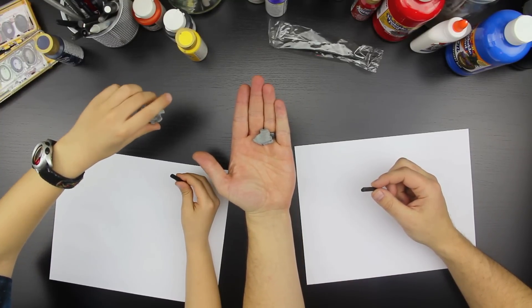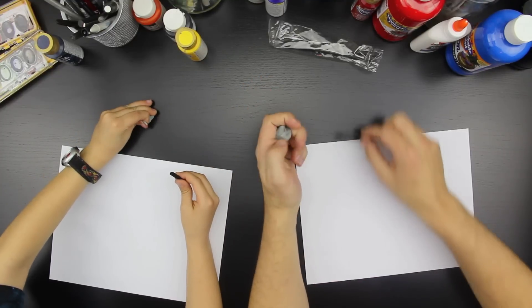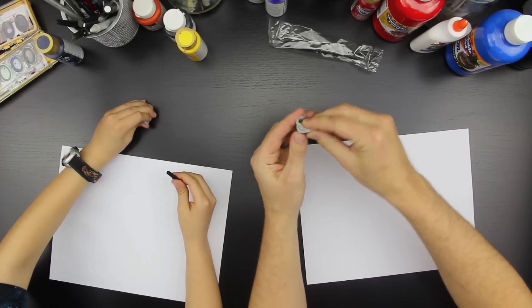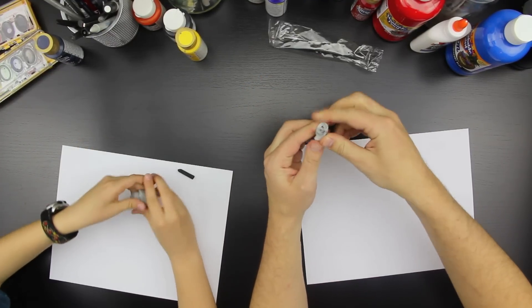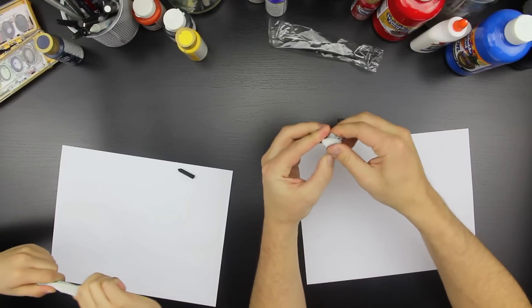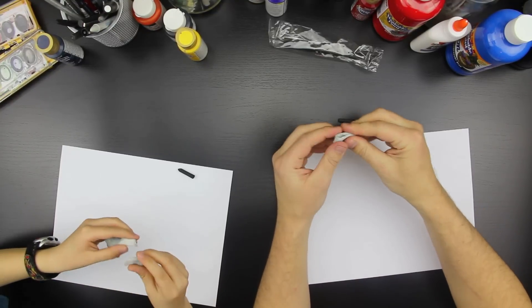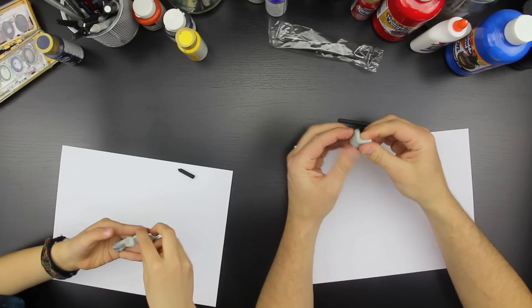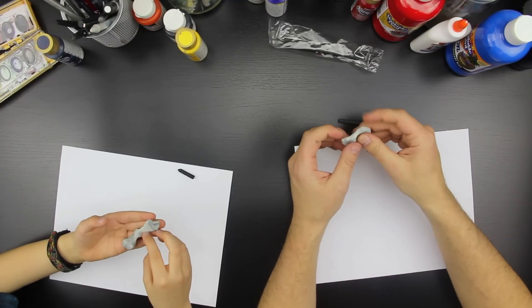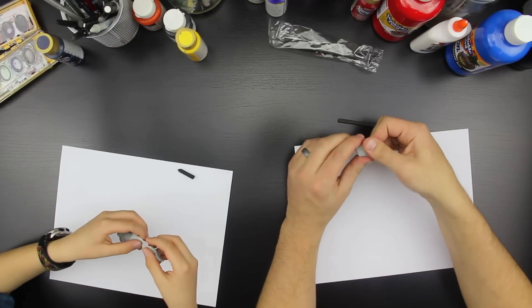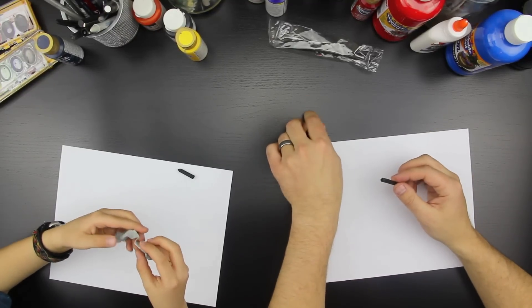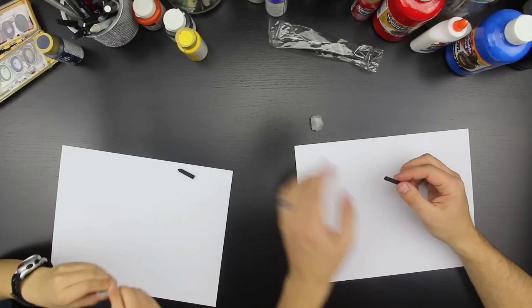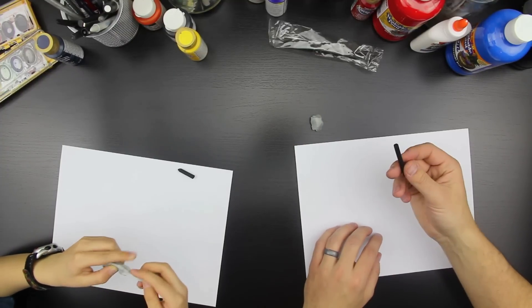And what's this called? A kneaded eraser. That means you can knead it like Play-Doh. When it gets really dark you can stretch it out and it cleans it. It's really soft, feels like a blanket. Alright, you ready? Got your charcoal?